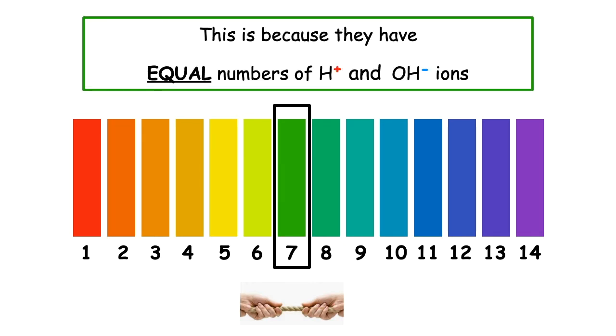Substances which are neutral have a pH equal to 7. This is because they have equal numbers of H+ and OH- ions. What we can see from the tug of war diagram is that we have equal numbers of players on either side, which means that the pH is always exactly 7.